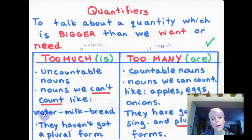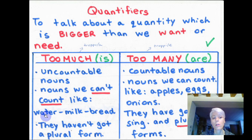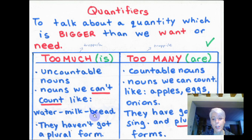But if I want water to become countable, I say: there are some bottles of water, there are some glasses of milk, there are some slices of bread. I use the verb 'are', meaning that my noun has become countable.